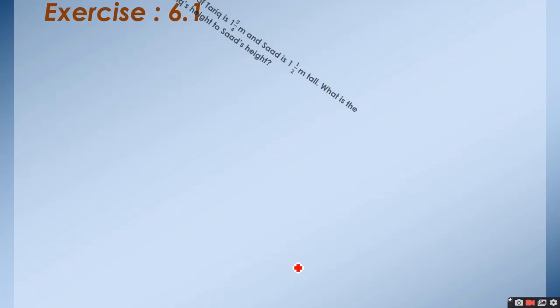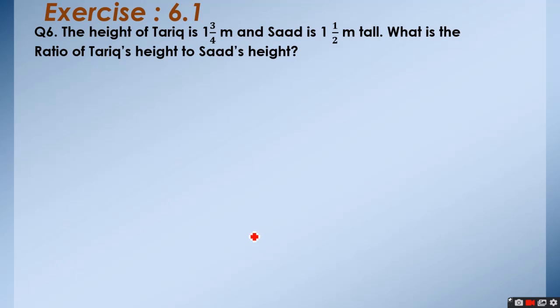Now, the third question, question number 6 and this is the word problem. The height of Tarek is 1 3/4 meter and Saad is 1 1/2 meter tall. What is the ratio of Tarek's height to Saad's height?